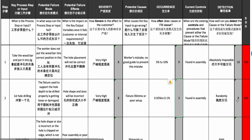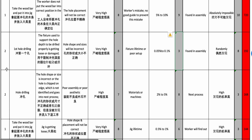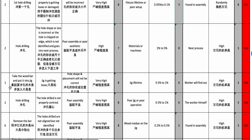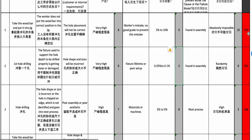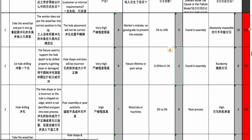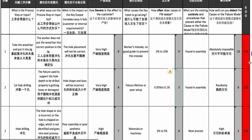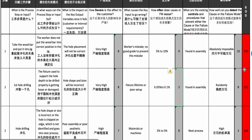For this failure mode, 8 × 3 × 8 = 192, which is still relatively high. The analysis keeps going through all process steps, and then you sort by the highest sources of risk at the top, working through them one by one to prioritize.